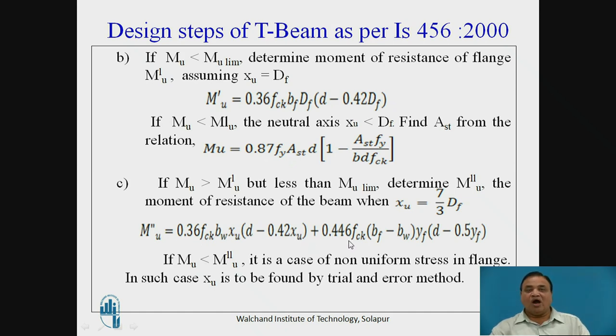Plus 0.446 FCK BF minus BW. So BW is already considered therefore this is 0.446 FCK BF minus BW into YF into D minus 0.5 YF. This is lever arm. If MU is less than MU' it is the case of non-uniform stress in the flange. In such case XU is to be found by trial and error method.